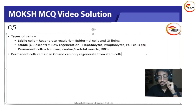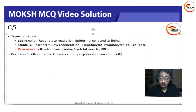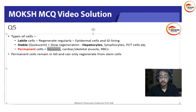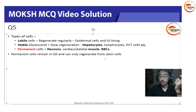Hepatocytes, lymphocytes, and so on. Now permanent cells — this is high yield. Essay questions often ask about this. Permanent cells are neurons, RBCs, and muscles — that's skeletal and cardiac muscle. These cannot divide at all.